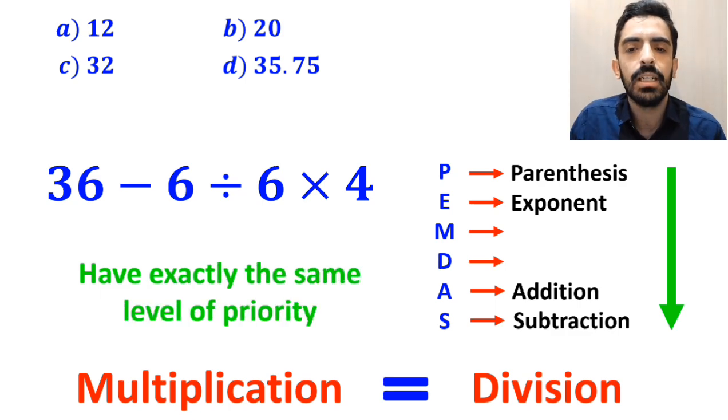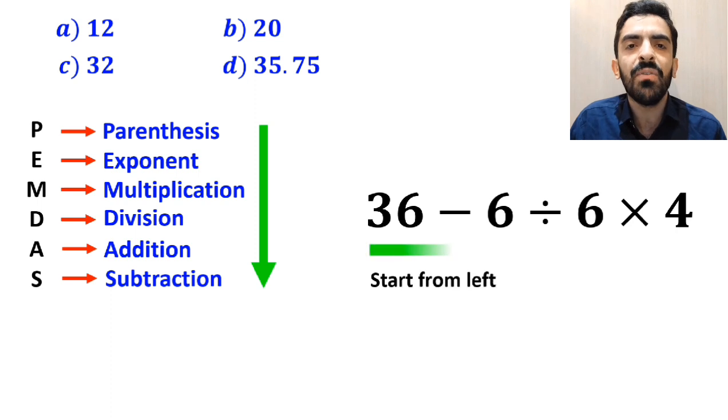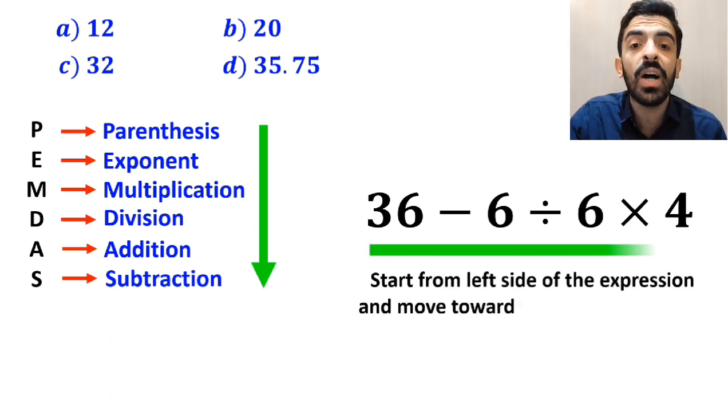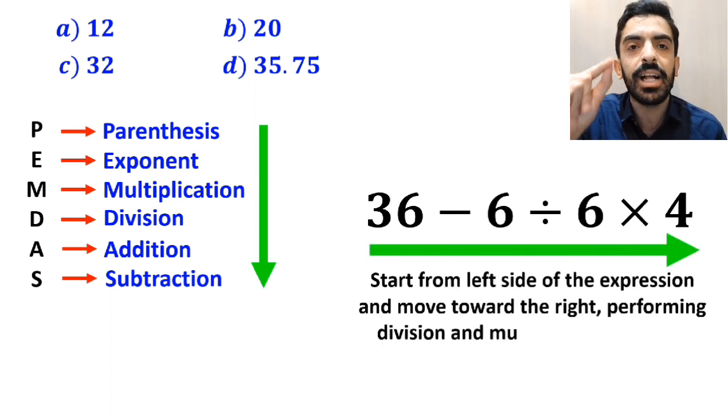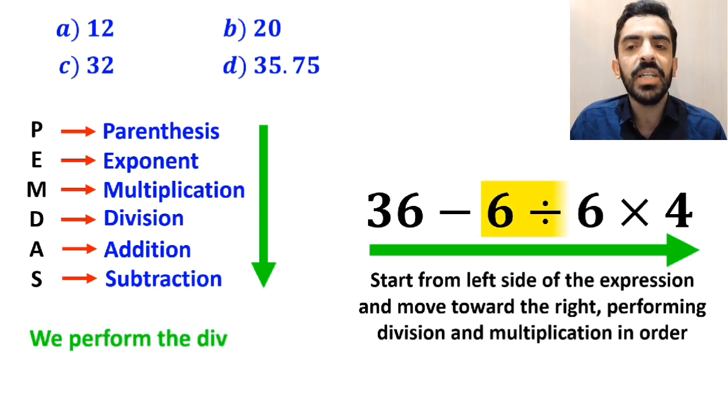In this situation, the best thing to do is to start from the left side of the expression and move toward the right, performing division and multiplication in order. So first we perform the division between the two sixes.